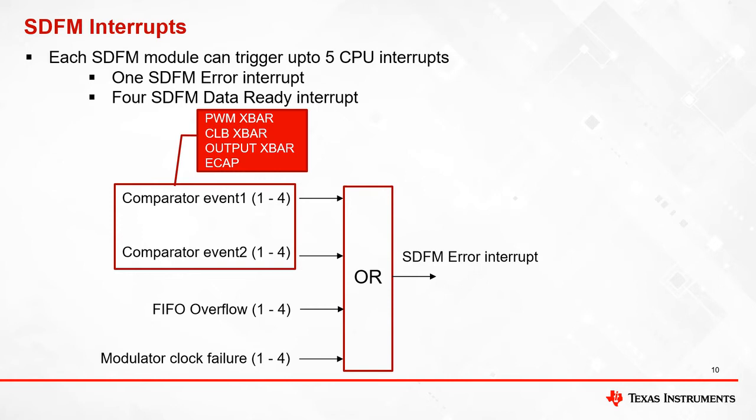SDFM comparator event 1 and event 2 can shut down the PWMs using the EPWM crossbar, can design custom logic in CLB using the CLB crossbar, can be brought out on a GPIO using the output crossbar, and are internally connected to ECAP allowing users to determine the frequency of these events.